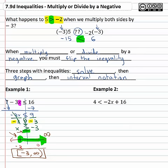Let's try a second example where we see this multiplying or dividing by a negative forces us to flip the symbol of the inequality. 4 < -2x + 16. We are really good at solving two-step equations by now, so we'll subtract 16 from both sides, giving us -12 < -2x.